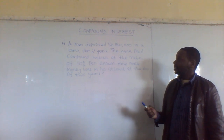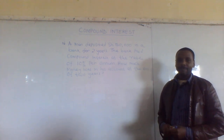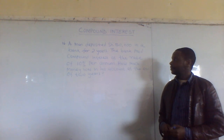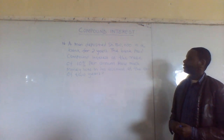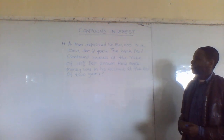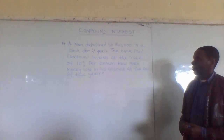Can you read the question? A man deposited 50,000 in a bank for two years. The bank paid compound interest at the rate of 10% per annum. How much money was in his account at the end of two years?